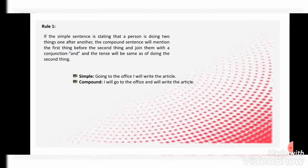The first rule says: if the simple sentence states that a person is doing two things one after another, the compound sentence will mention the first thing before the second thing and join them with the conjunction 'and.' The tense will match that of the second action. Example: 'Going to the office, I will write the article.' Two activities are present: first going to the office, then writing the article.